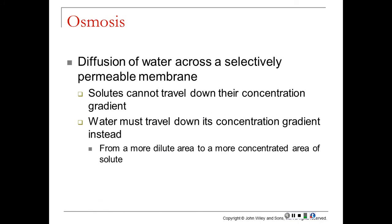Osmosis is a special type of diffusion — this is the diffusion of water across a selectively permeable membrane. Solutes can't travel down their concentration gradient in this case; water has to travel down the concentration gradient. It's kind of backwards from our thinking. Water is going to move from a more dilute area to a more concentrated area of solute. It's still going from a high concentration to a low concentration; it's just the concentration of water that we're looking at, not the concentration of solute.